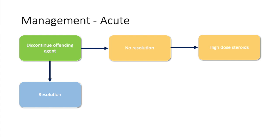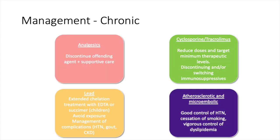In acute TIN, the easiest and most logical step is to remove the offending agent, which usually results in resolution, but in some cases high doses of steroids are also needed to attenuate the inflammatory response. In chronic TIN there is more to do: for analgesic nephropathy, discontinue the offending agent and provide supportive care including fluids and dialysis if needed. For cyclosporine or tacrolimus-related toxicity, the dose should be lowered to minimum therapeutic levels, or the immunosuppressive therapy discontinued or switched. For lead nephropathy, aim for extended chelation treatment with EDTA or succimer — though succimer has only been shown to work in children — and avoid further exposure while managing complications like hypertension, gout, and chronic kidney disease. For atherosclerotic and microembolic disease, focus on adequate blood pressure control, cessation of smoking, and vigorous control of dyslipidemia.